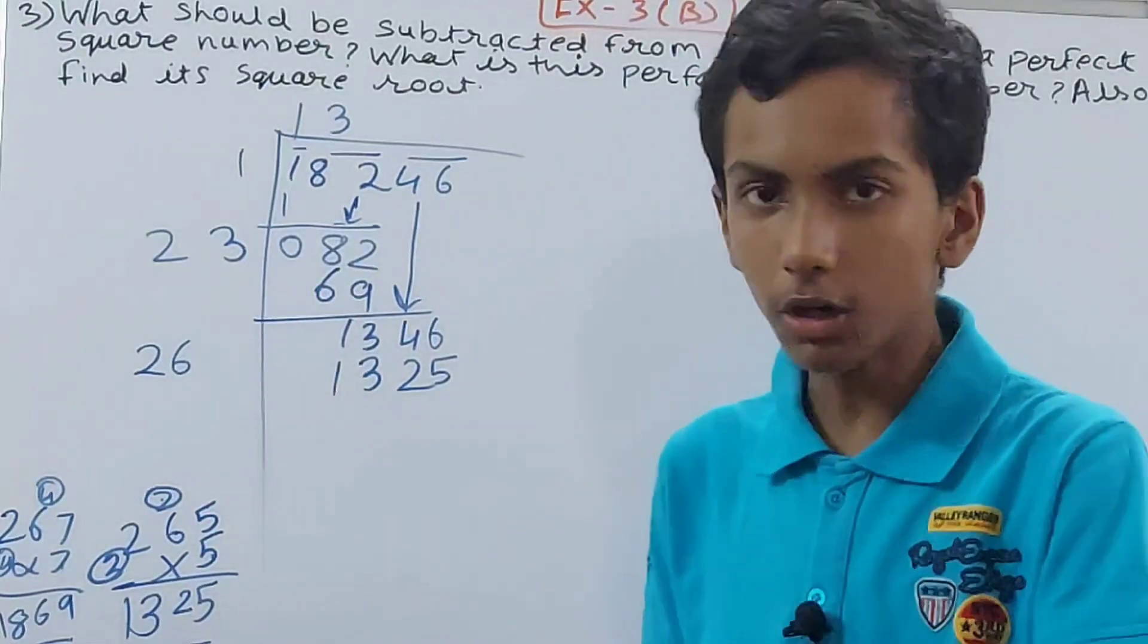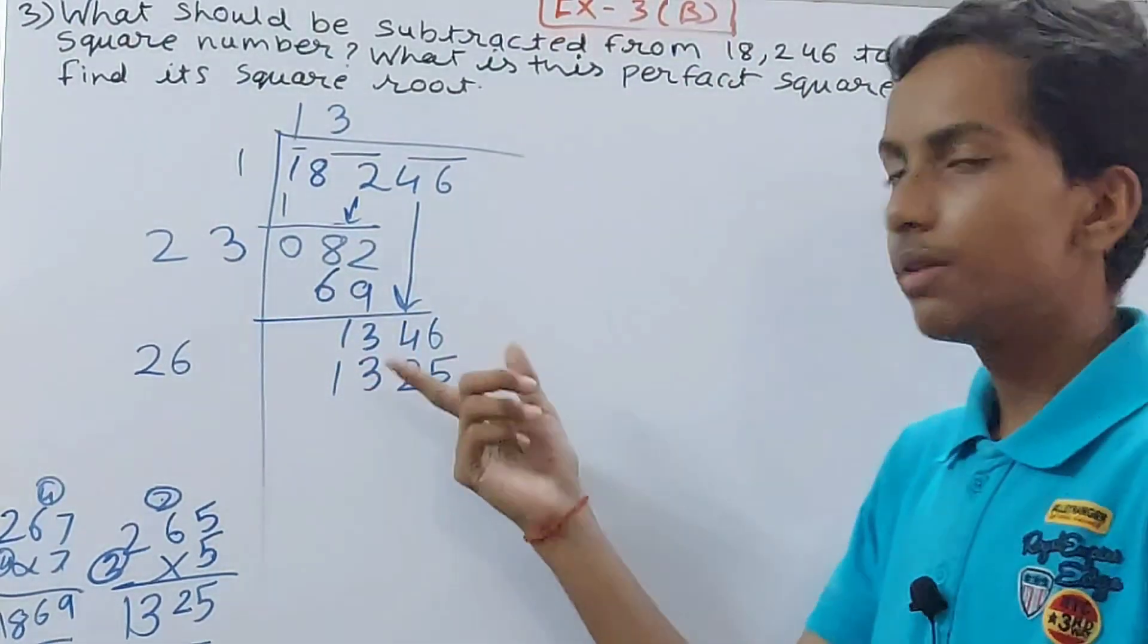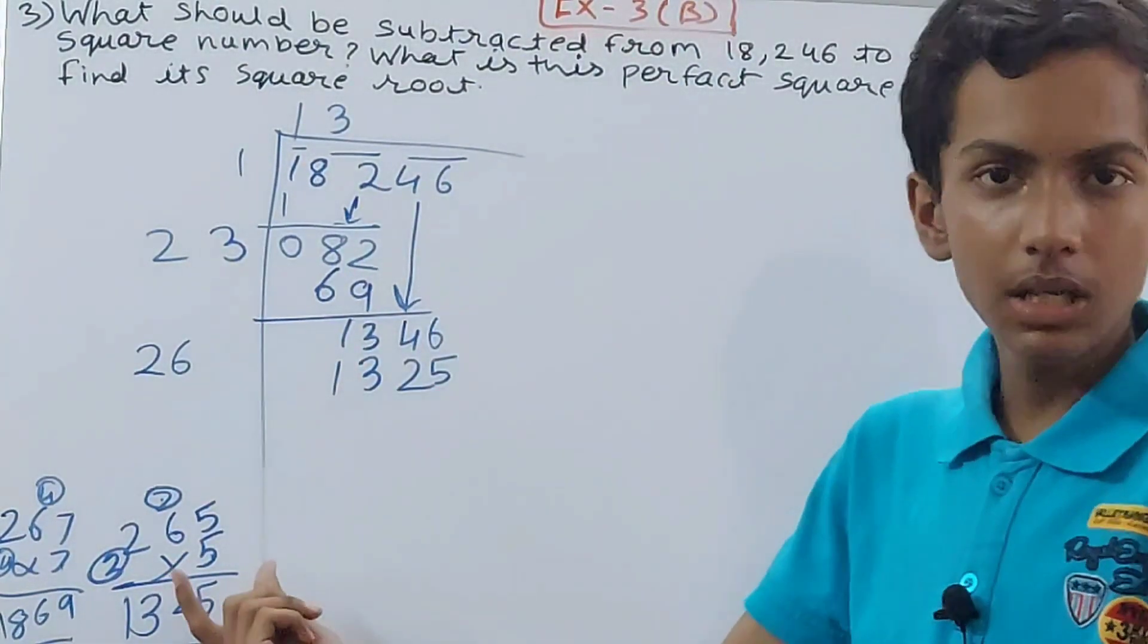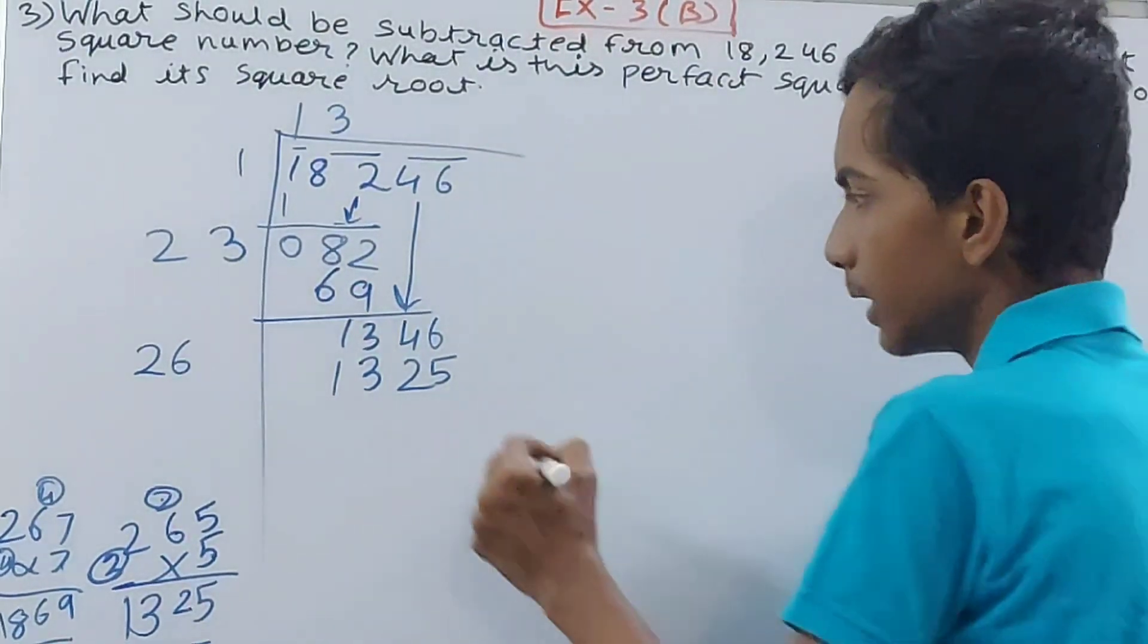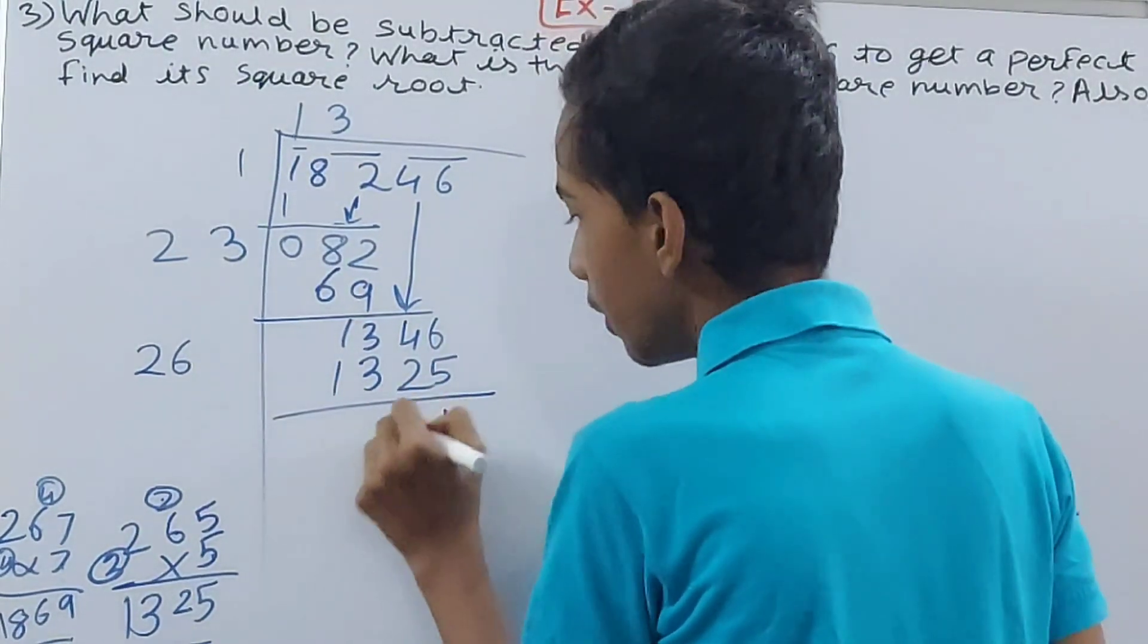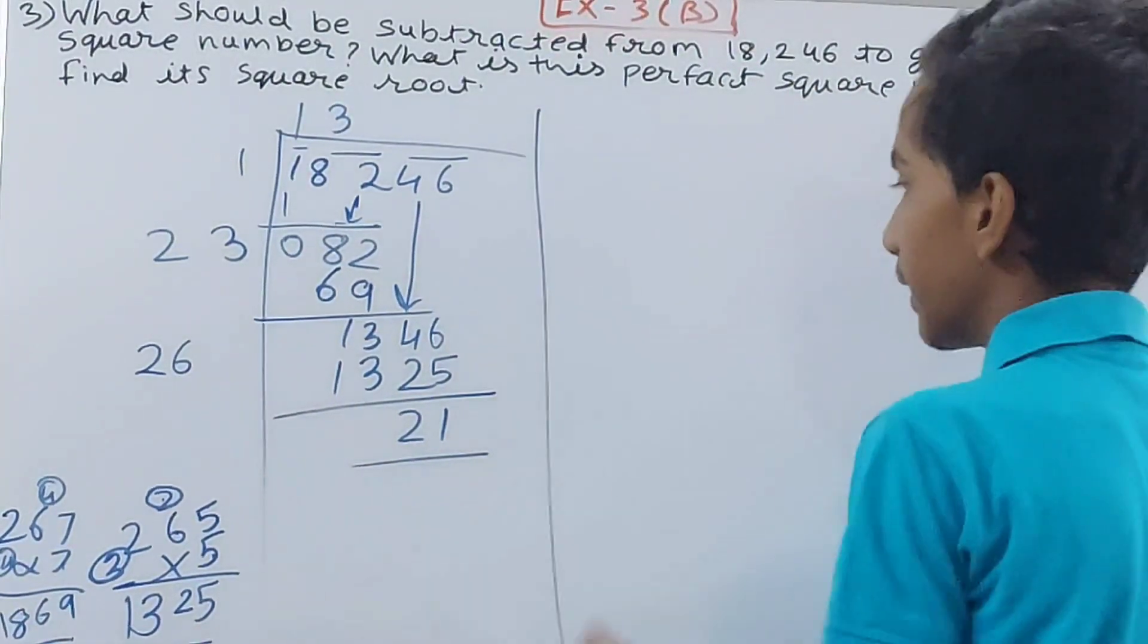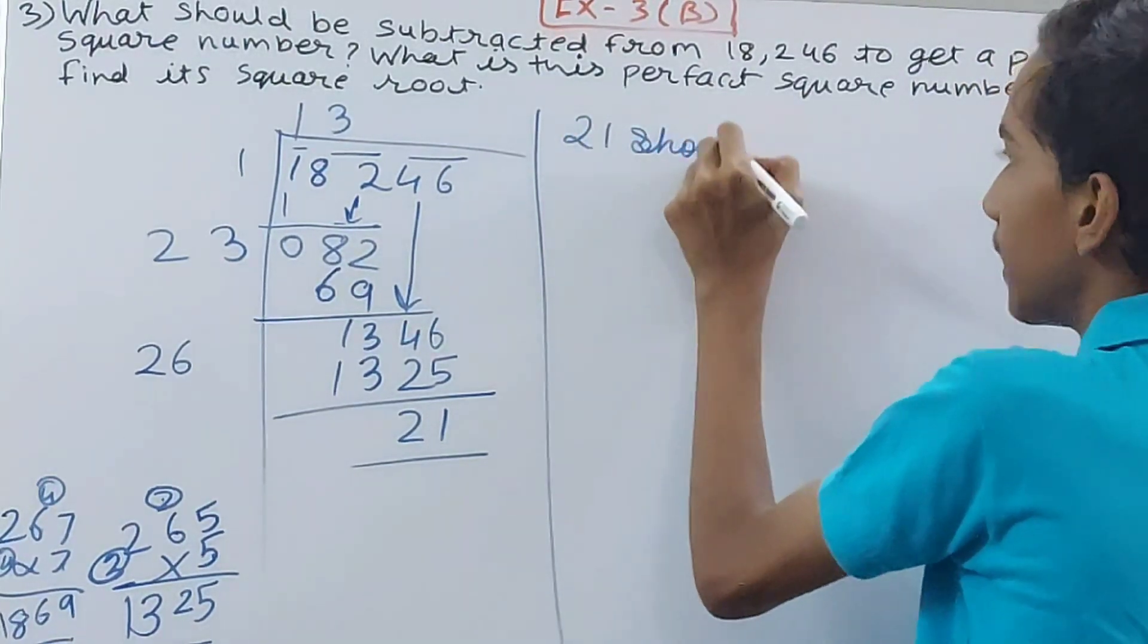If it was a perfect square, then we will get an exact value. But if it is the last pair and you are getting the nearest value but not exact, then subtract the nearest value. This will be 1 to 21. Leave it here. 21 is left in the remainder. This number should be subtracted, right? So 21 should be subtracted.